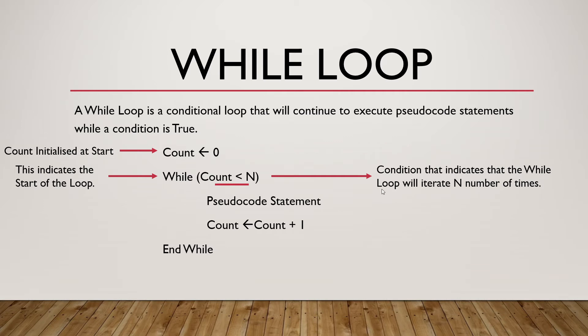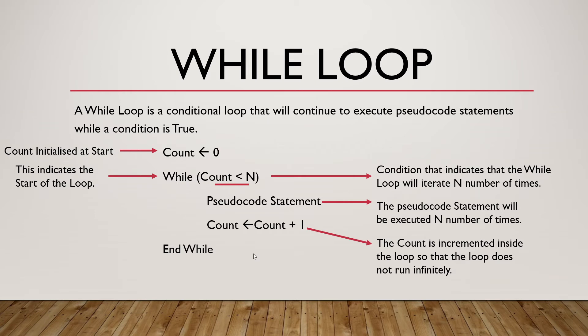The pseudocode statement that has to be iterated is found inside this while loop. The count is incremented inside the loop so that the loop does not run infinitely. And lastly, the end while indicates the end of the loop.